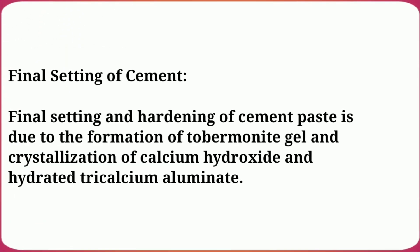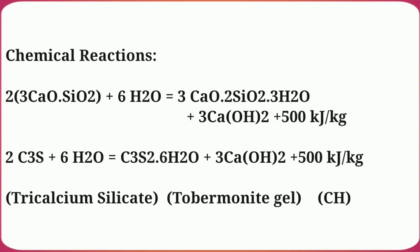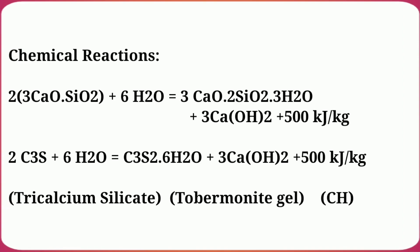Final setting of cement paste is due to the formation of tobermorite gel and crystalline calcium hydroxide and hydrated tricalcium silicate. Tricalcium silicate (3CaO·SiO₂) reacts with water to form tobermorite gel and calcium hydroxide, releasing 500 kJ per kg of energy. Here calcium hydroxide is the crystalline product.